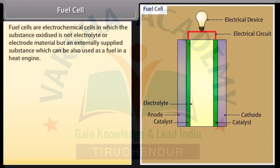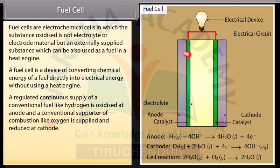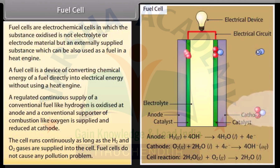Fuel cells are electrochemical cells in which the substance oxidized is an externally supplied substance that can also be used as fuel in a heat engine. A fuel cell converts chemical energy of a fuel directly into electrical energy without using a heat engine. Hydrogen is oxidized at the anode and oxygen is supplied and reduced at the cathode. The cell runs continuously as long as hydrogen and oxygen gases are supplied. Fuel cells do not cause any pollution problem.